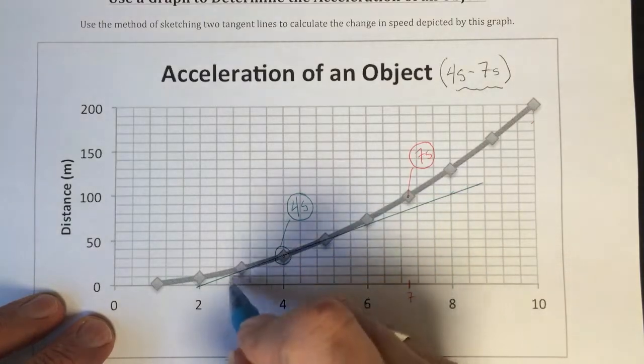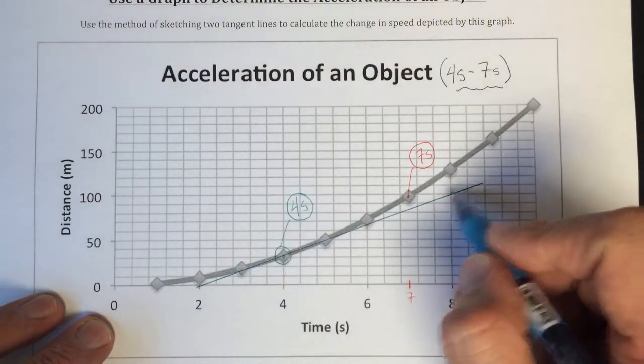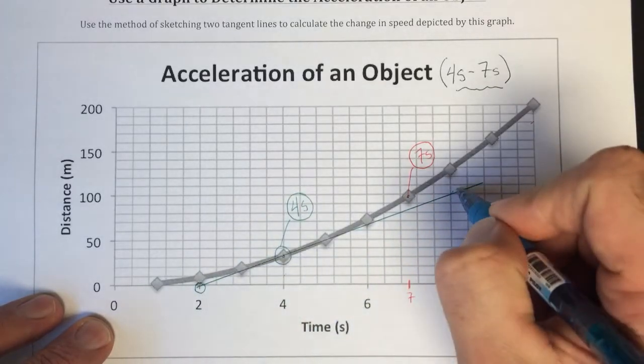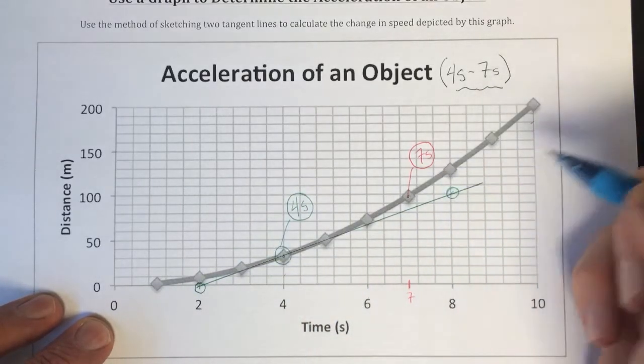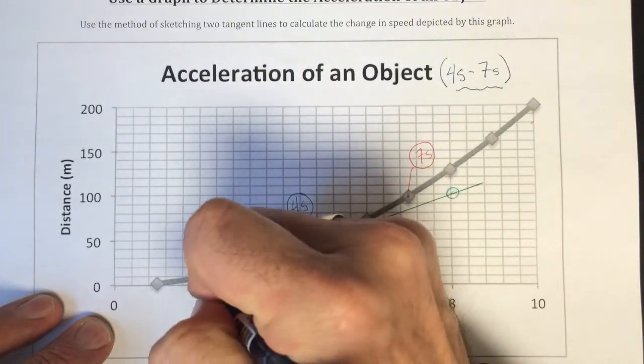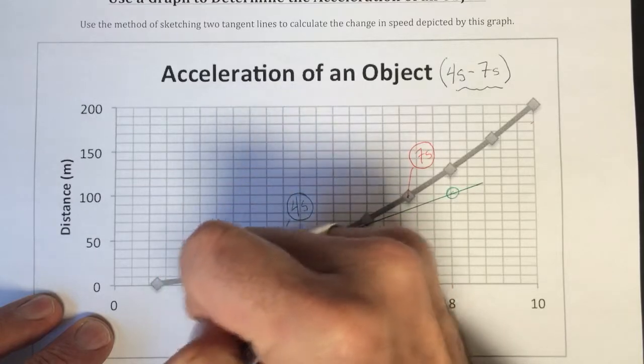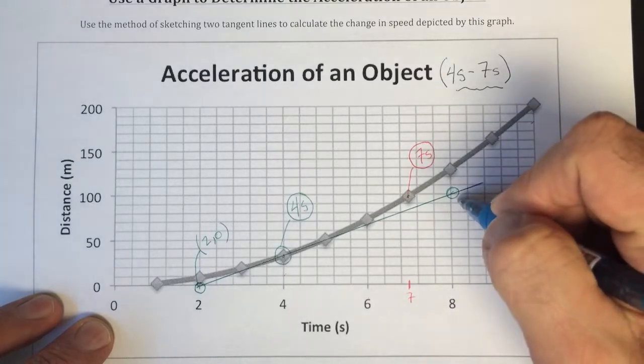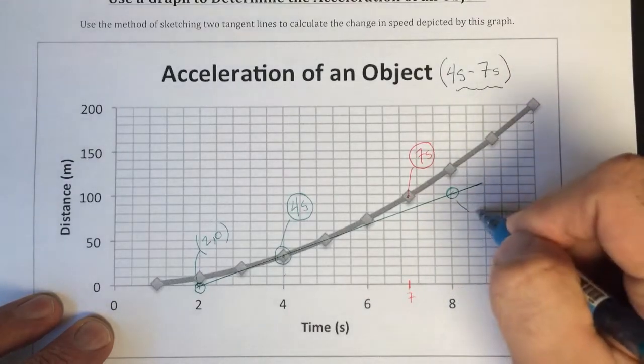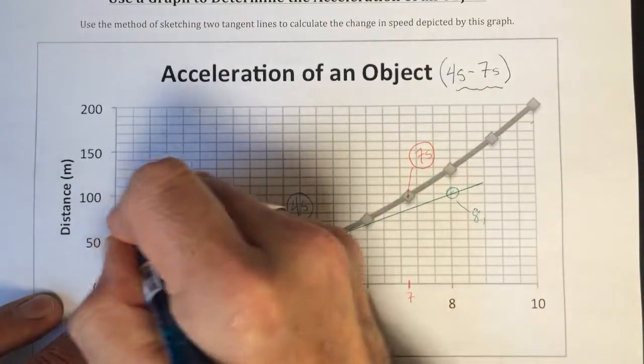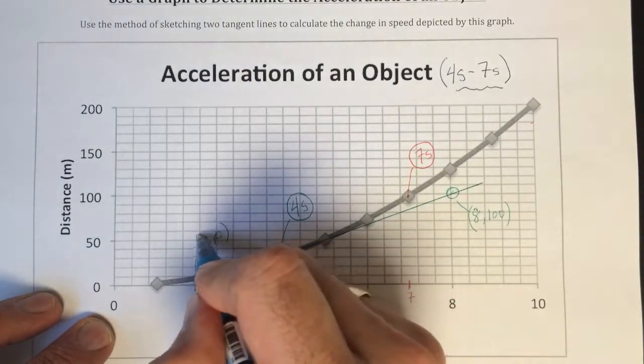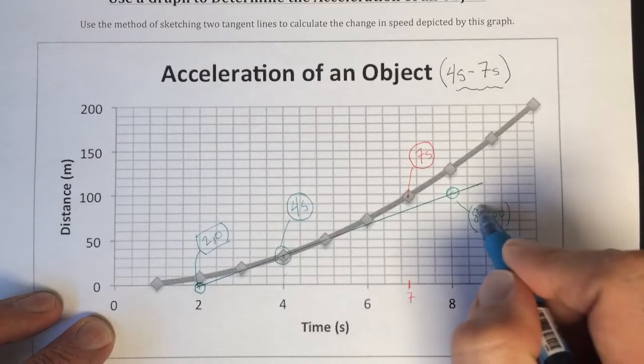And on this green line, what I need to do is identify two points which are far from one another, or reasonably far. I see that this intersects this spot right there. So that's going to be one point. And we have an intersection right there. So that'll be my next point. So this data point right here is two on the x-axis and zero on the y. And this point is eight on the x-axis and it looks like it's 100 on the y-axis. So those are my two data points, two zero and eight one hundred.